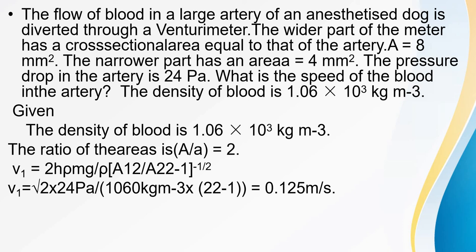The ratio A/a = 8/4 = 2. Using the venturi meter velocity formula derived in the previous video: v₁ = root of [2 × ΔP / ρ × (A₁²/A₂² − 1)⁻¹]. Substituting ΔP = 24 Pa, ρ = 1060 kg/m³, and A₁/A₂ = 2, we get v₁ = 0.125 meter per second. For doubts on this formula, refer to the previous video.